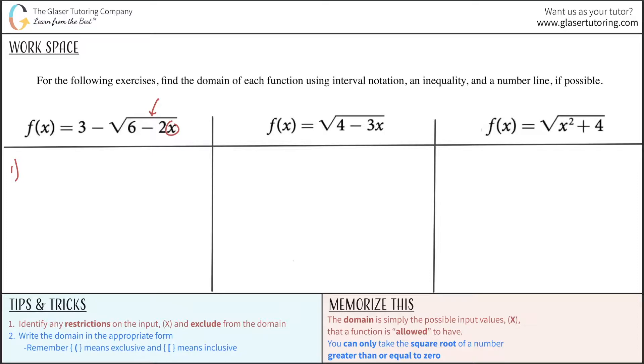Anytime you have a square root with a variable underneath it, you have to be aware that there is a limitation. And the limitation is that the value under here, the total value cannot be less than zero. In other words, it has to be greater than or equal to zero. So what we're going to do is take whatever is under the radical, 6 minus 2x, set it then greater than or equal to zero.